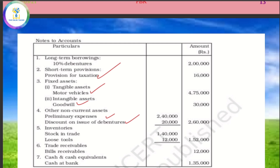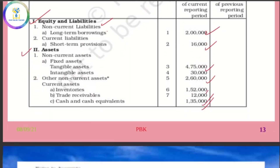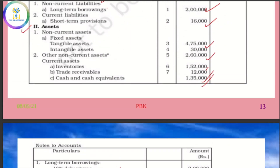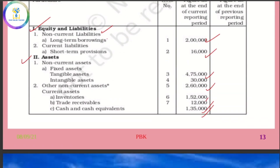Inventories include stock in trade and loose tools. Trade receivables include bills receivables, and cash and cash equivalents. If you have any notes to accounts, you need to use the amount in the format. For example, note number one covers short-term provisions, and note number two covers other information as required.